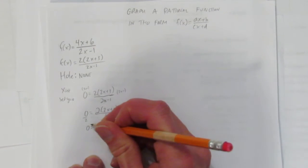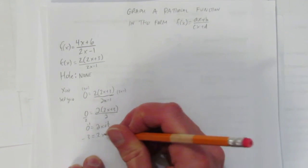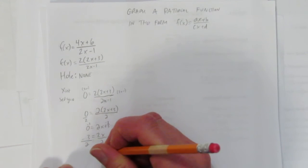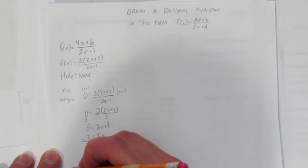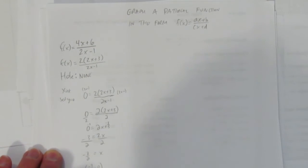Now I'm just going to subtract 3 from both sides. And I get -3=2x. How do you get x by itself? Divide by 2. And so x=-3/2. So the x-intercept is at -3/2, or -1.5, 0.